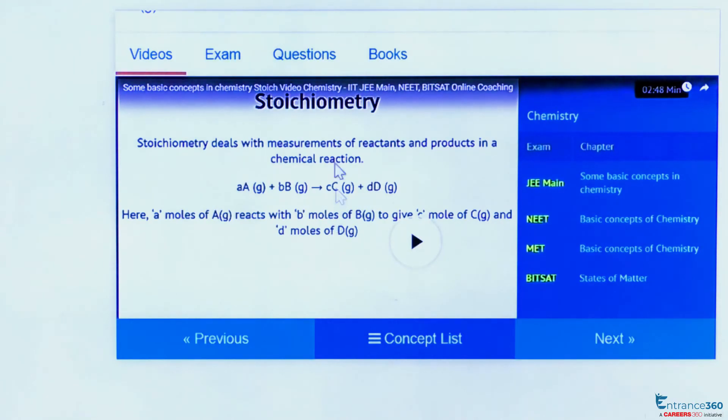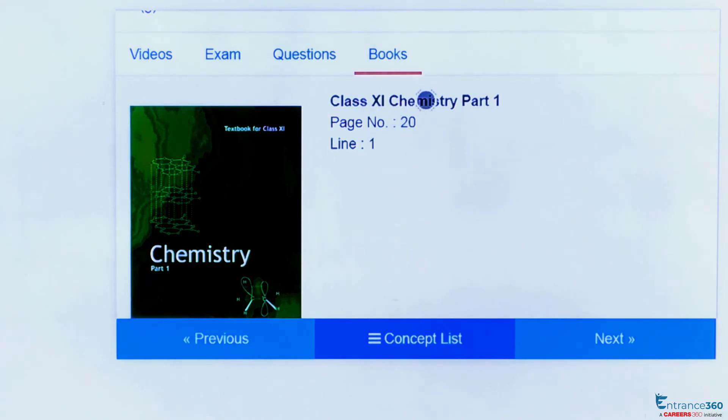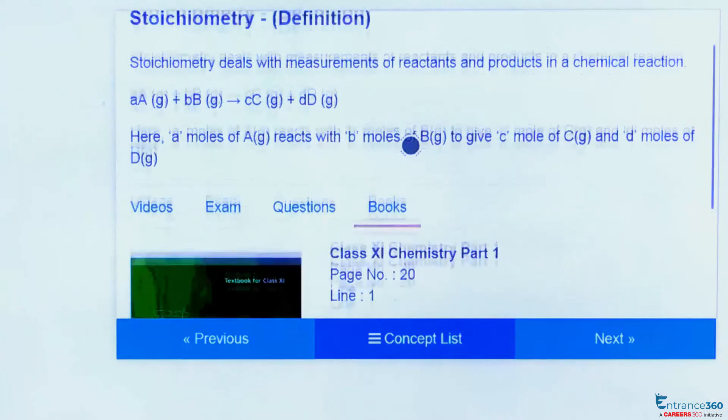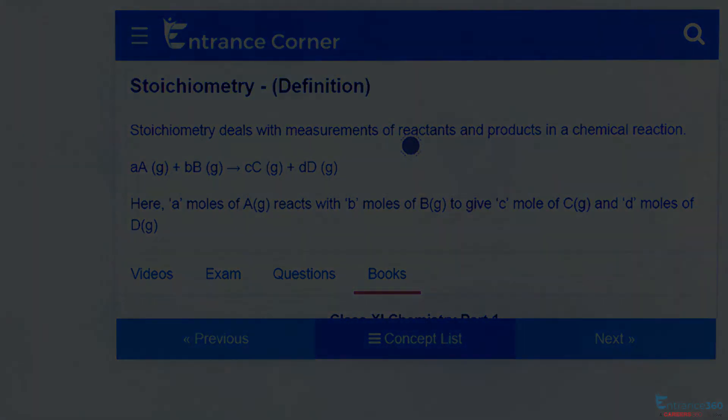We can also refer to the NCERT book Chemistry Part 1 of Class 11, and this concept can be found on page number 20, line number 1. Thank you, students.